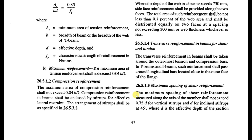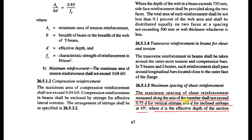Next, let's look at the maximum spacing of shear reinforcement. The maximum spacing of shear reinforcement measured along the axis of the member shall not exceed 0.75d for vertical stirrups and d for inclined stirrups at 45°, where d is the effective depth of the section. Usually we provide vertical stirrups; for inclined stirrups, the maximum spacing shall not exceed d.